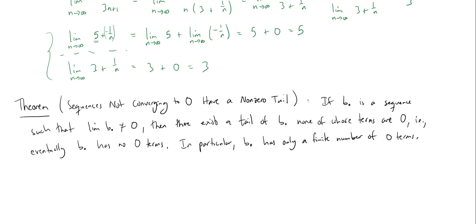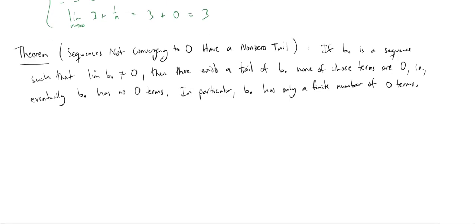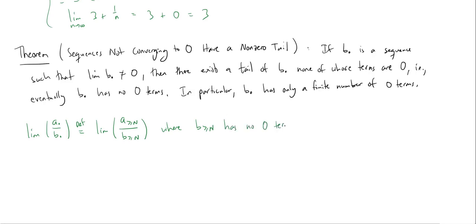What this means is: if we want to define the limit of a over b, and b does not converge to zero, then we define this as simply the limit of the tail sequences, where that tail has no zero terms. Because the idea with sequences is we only care about what eventually happens, there's no damage in defining such a limit this way. This theorem is left as a homework exercise.